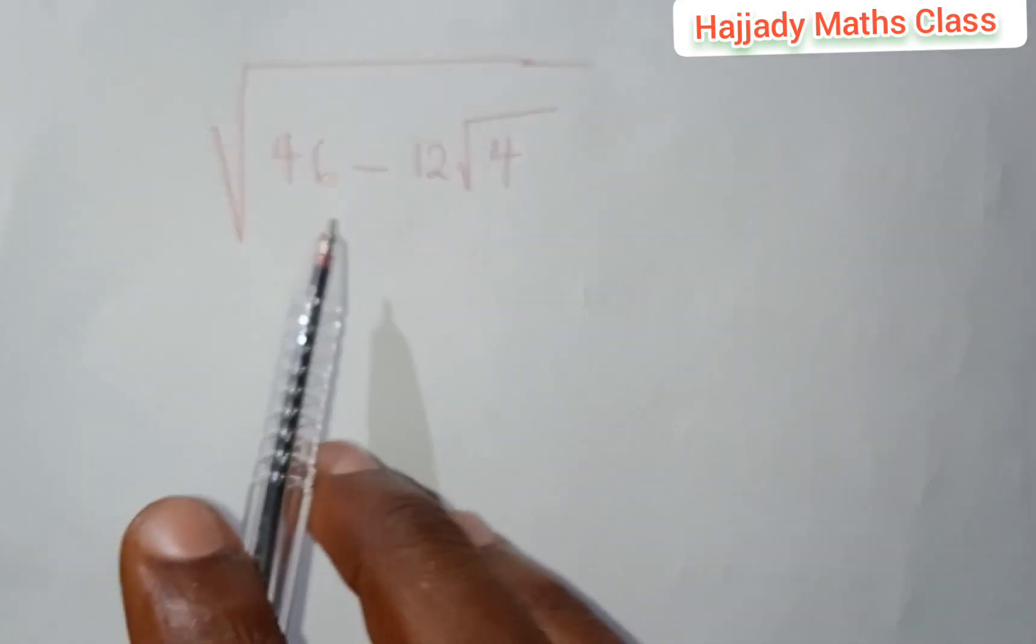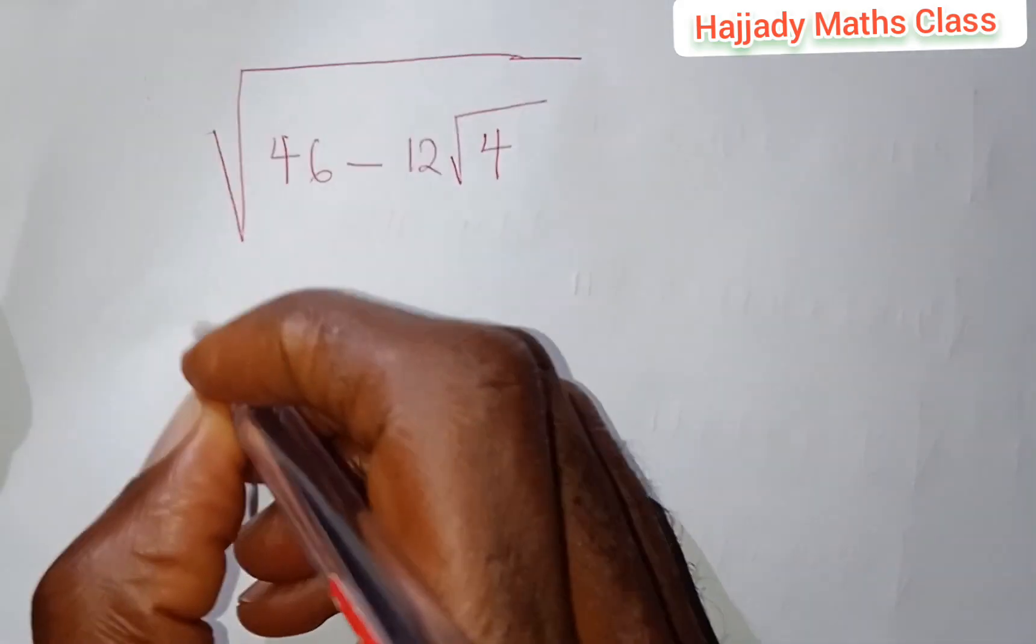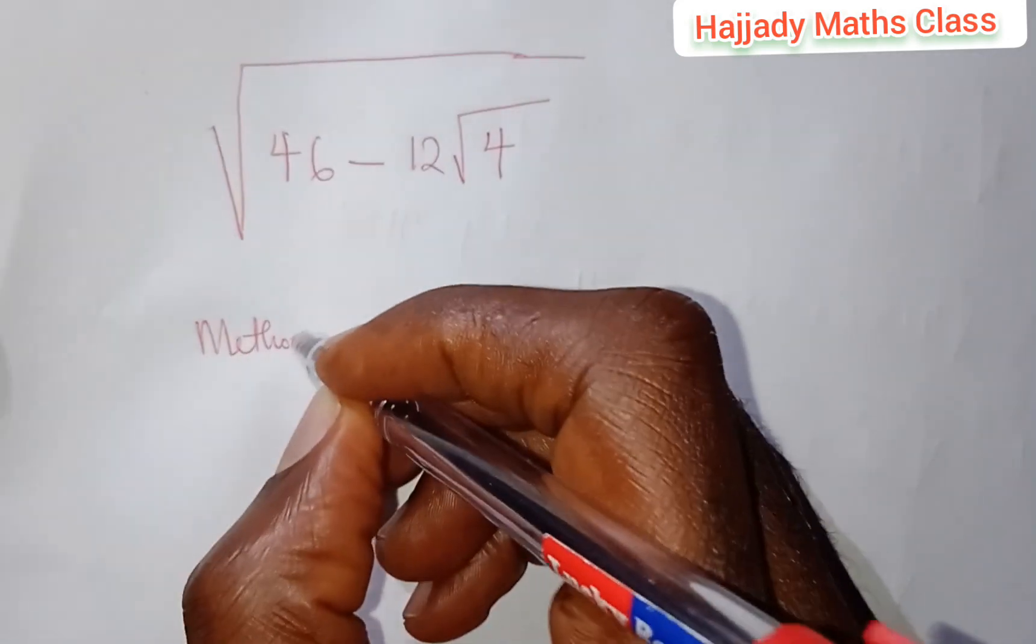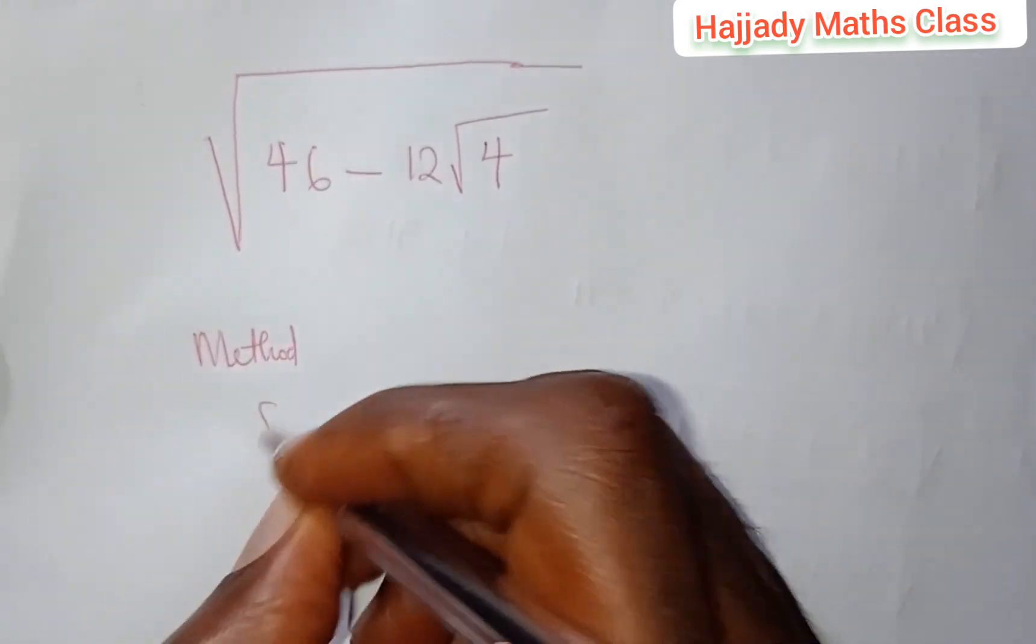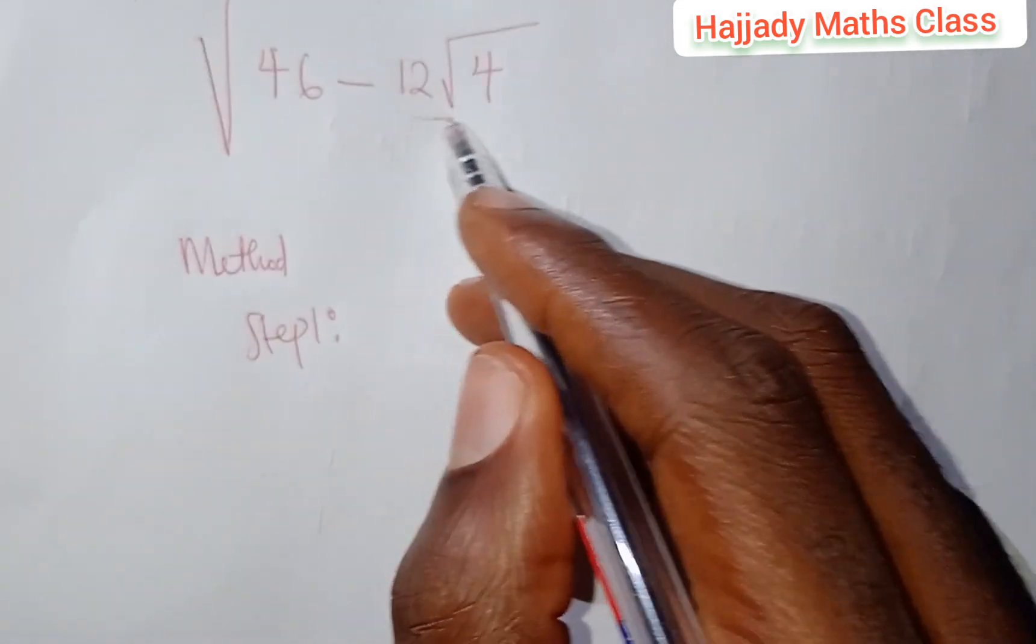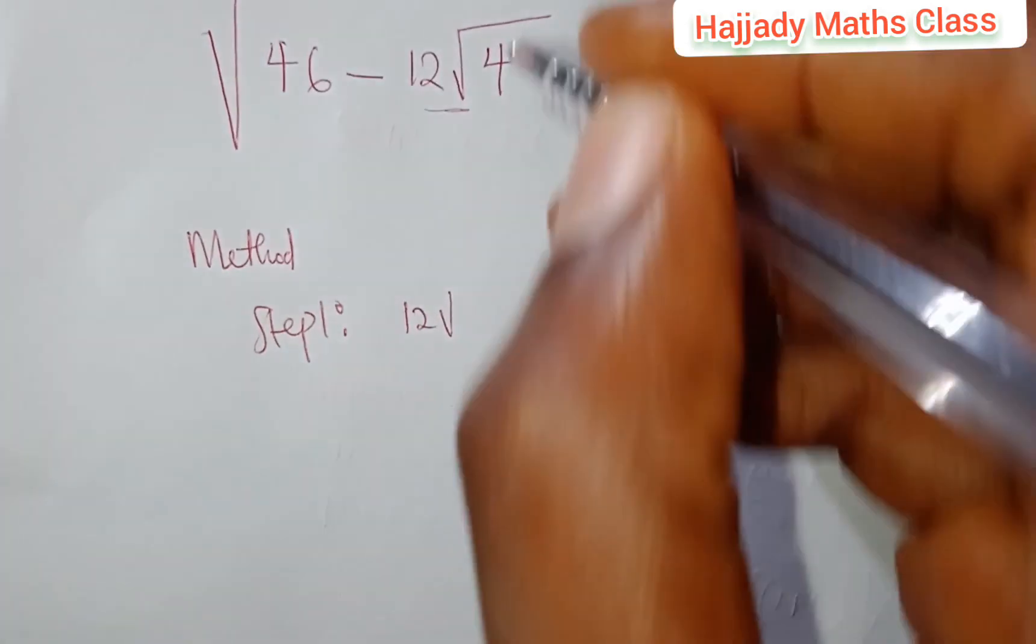Here we have √46 - 12√14. For us to do this, the first method, or let me call it the first step, step 1. Let's solve this first. We have 12√14.